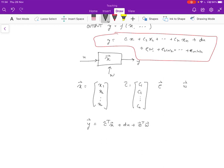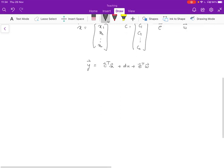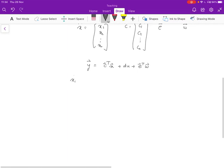Now what about the state itself? The state itself is going to be affected by the inputs. So in general, we can say, for example, X1 dot in a simple linear time-invariant system.